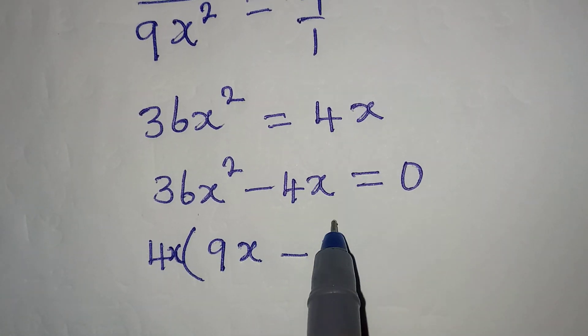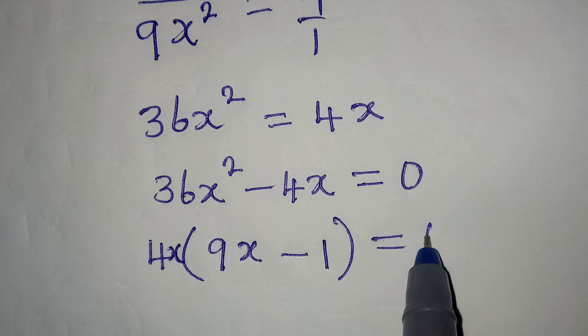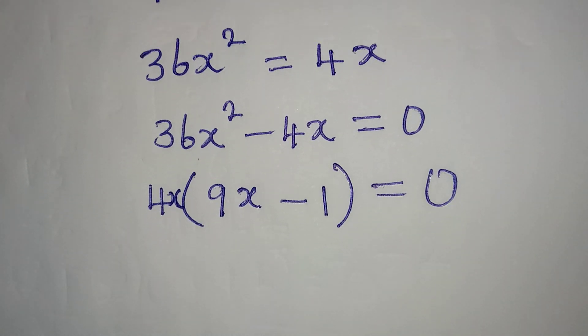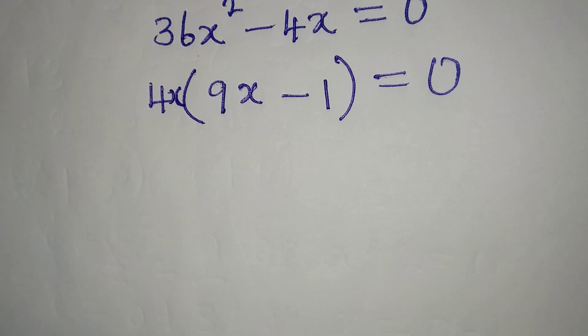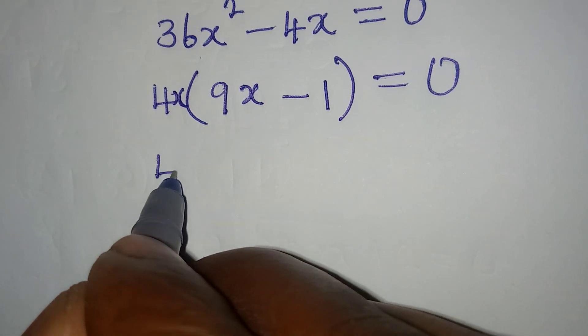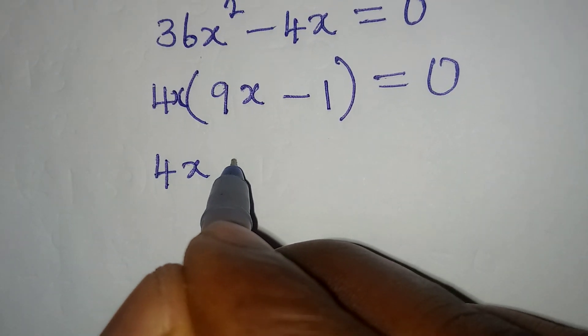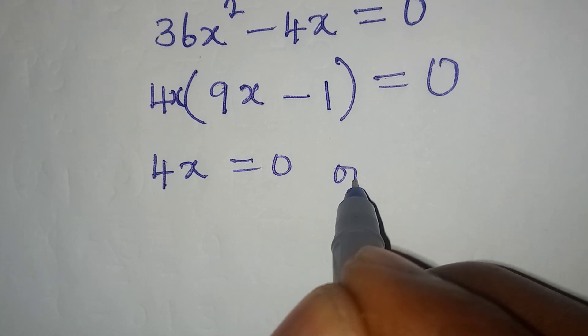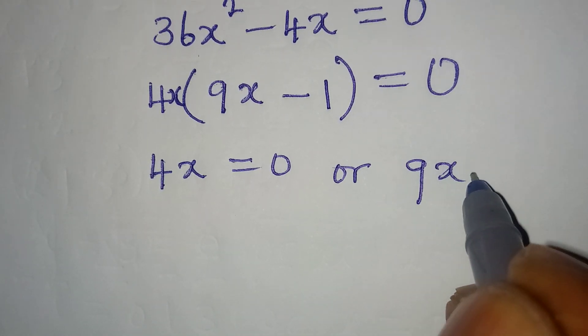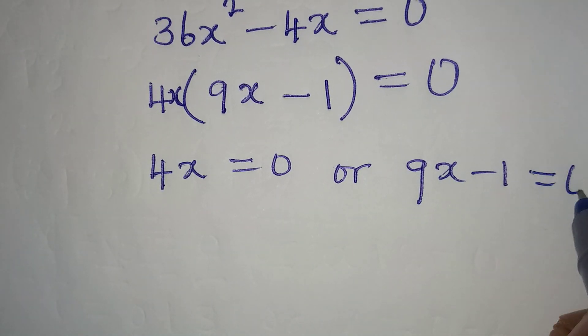If we continue, we can now apply zero product property. It is either 4x = 0, or 9x - 1 = 0.